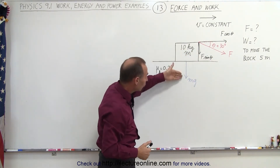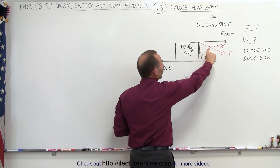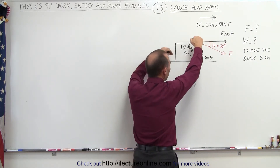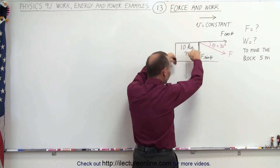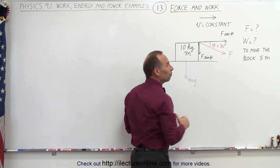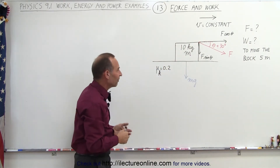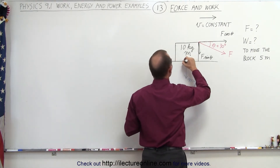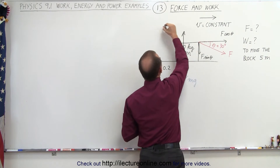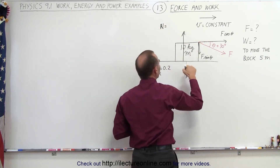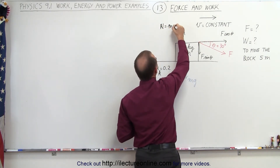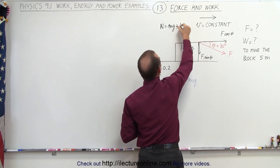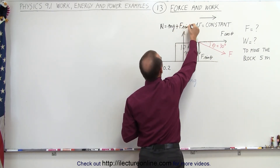Both the weight of the block, mg, and the vertical component of the force we're pulling with — acting downward — both push the block against the floor, and the floor will push back. That's Newton's third law: for every action there's an equal and opposite reaction. So the normal force will equal the weight of the block plus the vertical component of the force: mg plus F times the sine of theta.